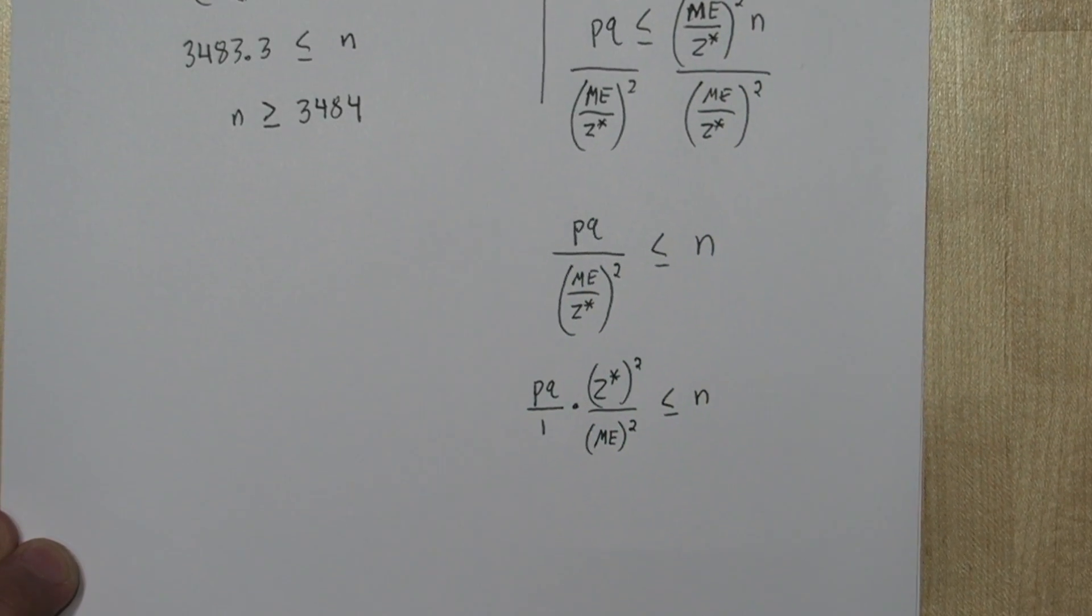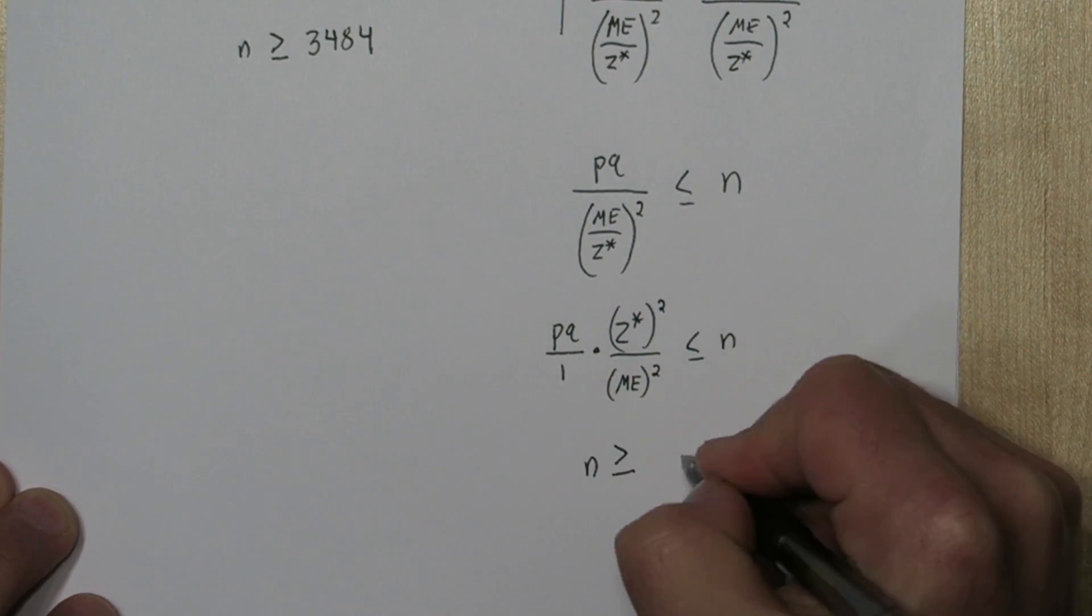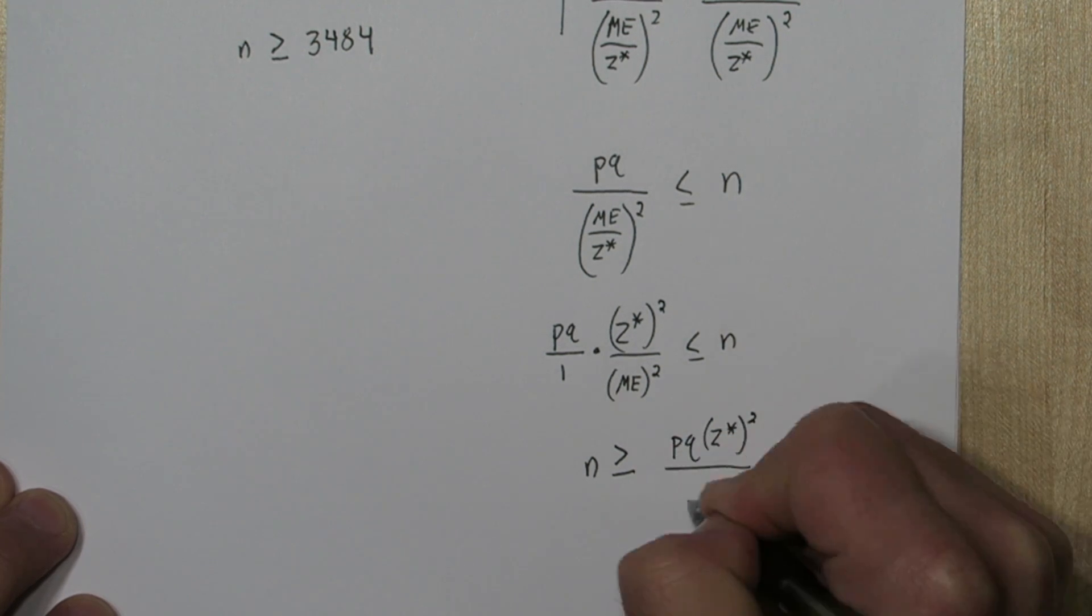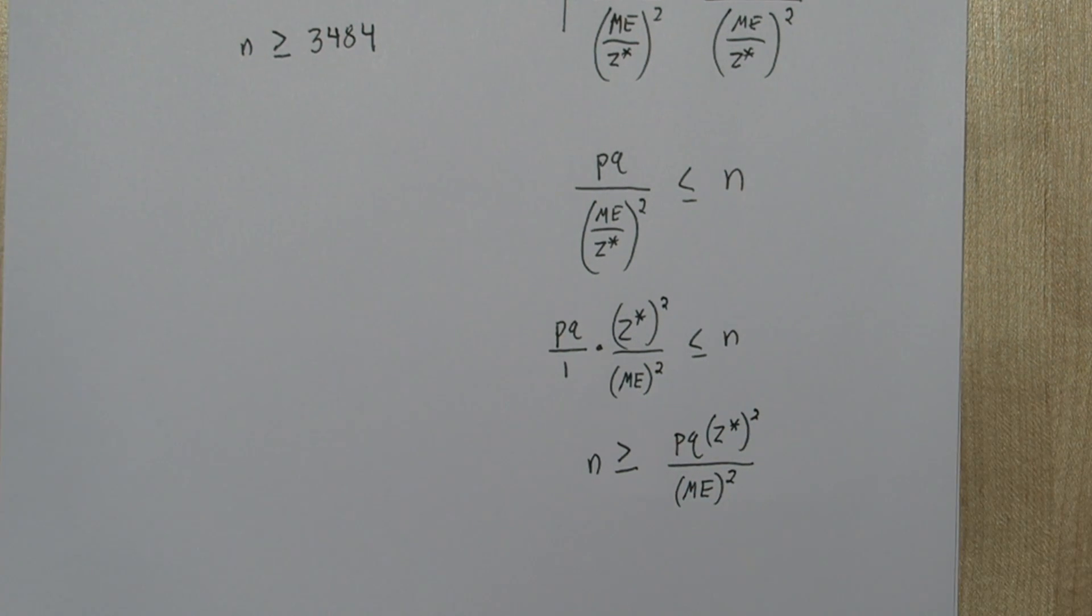And now we have our formula. n needs to be greater than or equal to p times q times z star squared all over margin of error squared. So with this, you can just plug the values in from the beginning of the problem and get your answer right away.